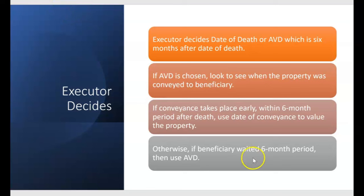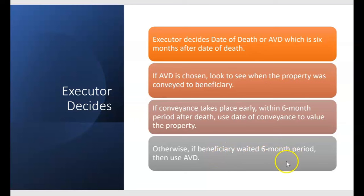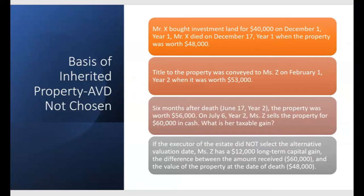Here comes the tough part. If the alternate valuation date is chosen, look to see when the property was conveyed to the beneficiary. If conveyance takes place within the six-month period after death, use the date of conveyance to value that property. But if the beneficiary waited at least six months to receive the asset, then use the alternate valuation date. The beneficiary must be patient enough to wait the full six months — otherwise, you must value that asset on the date of conveyance.